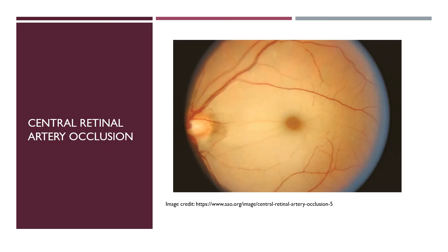CRAO may also occur with inflammatory diseases, especially in the older population, such as giant cell arteritis, which causes small and medium vessel vasculitis and can lead to vascular occlusion. If this is suspected, erythrocyte sedimentation rate (ESR) and C-reactive protein (CRP) should be ordered to assess for elevation. If elevated, prompt initiation of steroid therapy is critical to decrease inflammation not just in the affected eye, but in the fellow eye, which could also suffer vision loss.